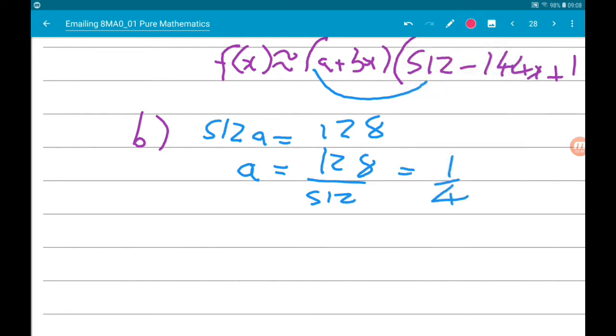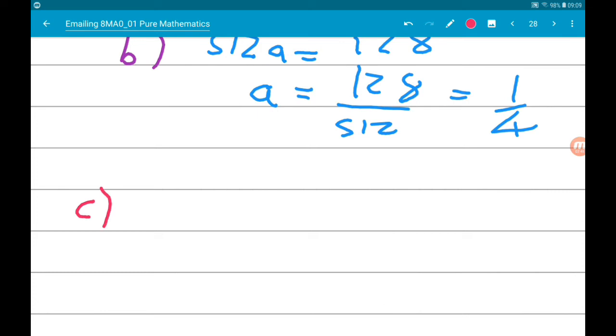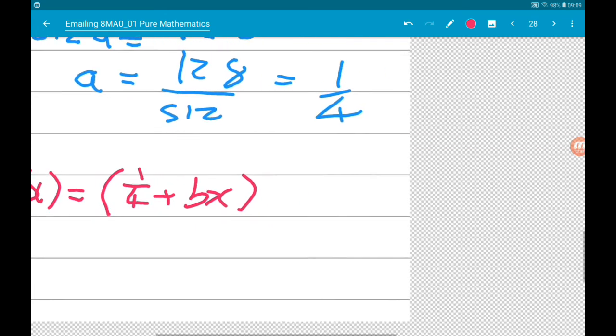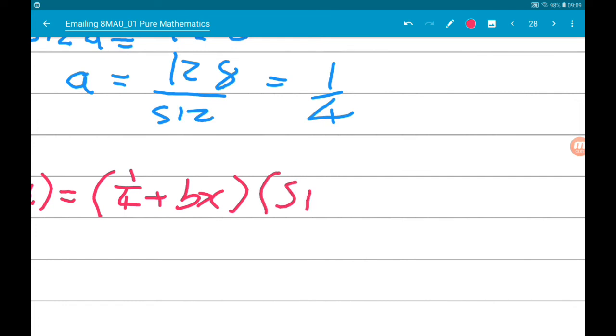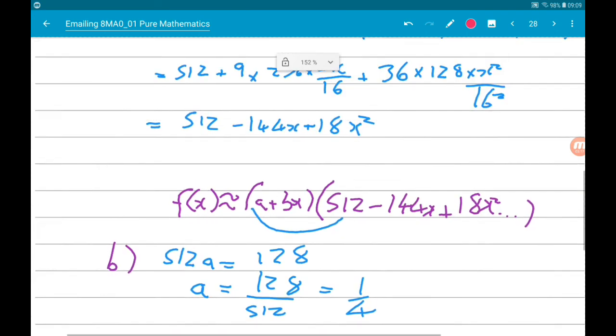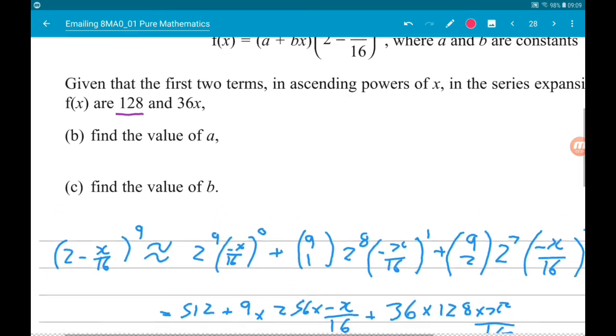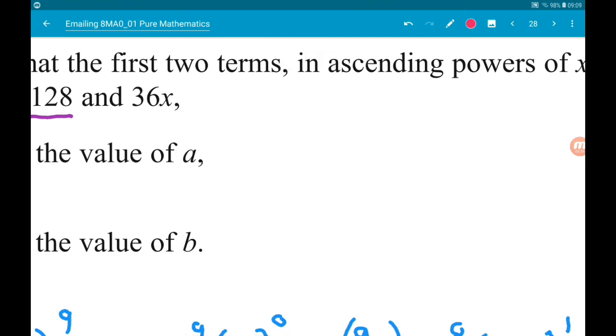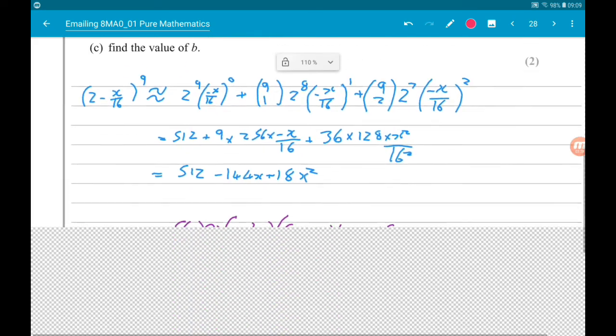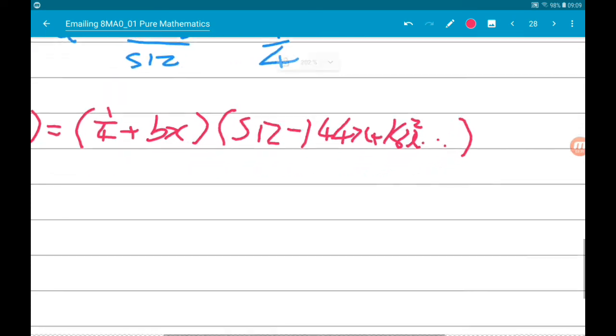Okay, then for part c, let's put in the value of a that we've just found. So f of x is one quarter add bx times 512 minus 144x add 18x squared. We know that the second term, the x term is 36x. So we need to see what x terms we would get from this expansion.